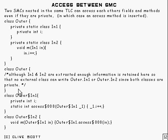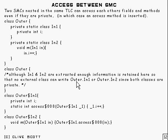Here's how it's going to be translated by the compiler — it'll effectively turn into this piece of code. First of all, outer has nothing in it. There is actually enough information retained in the system to ensure that you can't write something like outer.in1 or outer.in2, because both of these classes are private. So although it doesn't have any code in there, the compiler retains enough information to prevent that from happening.